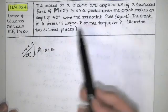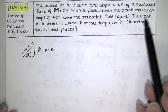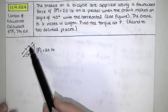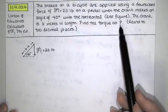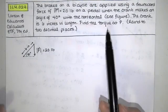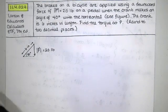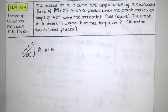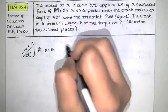The crank is six inches in length. Find the torque at P, rounded to two decimal places. Now torque is actually a vector, but what WebAssign really wants is the magnitude of the torque.